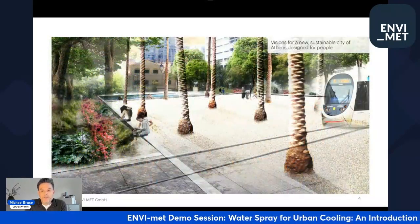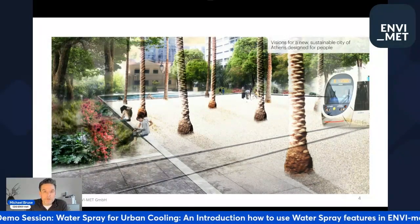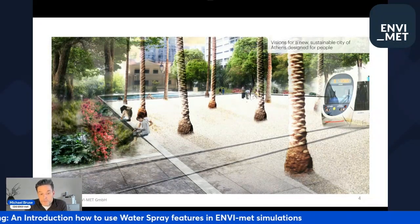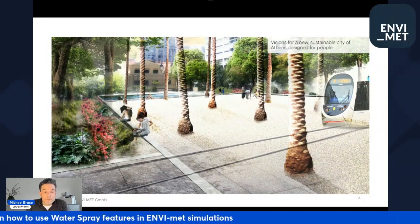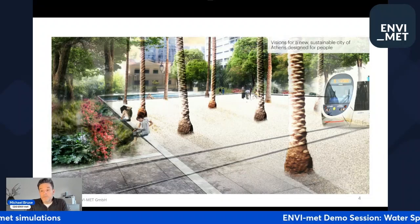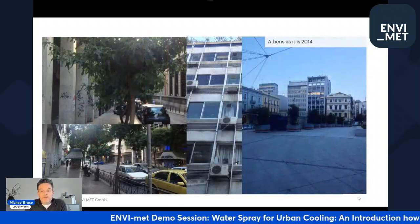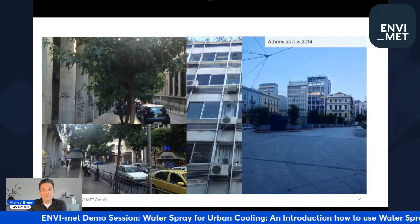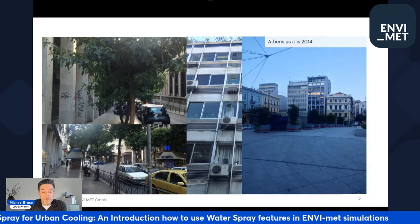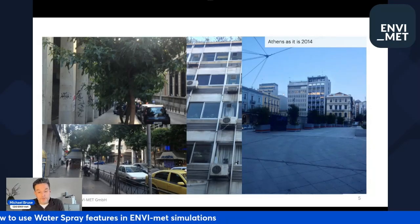Just a few renderings to give an impression. Some things have been built, like the extension of the tramline; others have not, like the complete reconstruction of the places. This is how Athens looked in 2014 — not much vegetation — definitely a good idea to think of some urban redesign strategies.